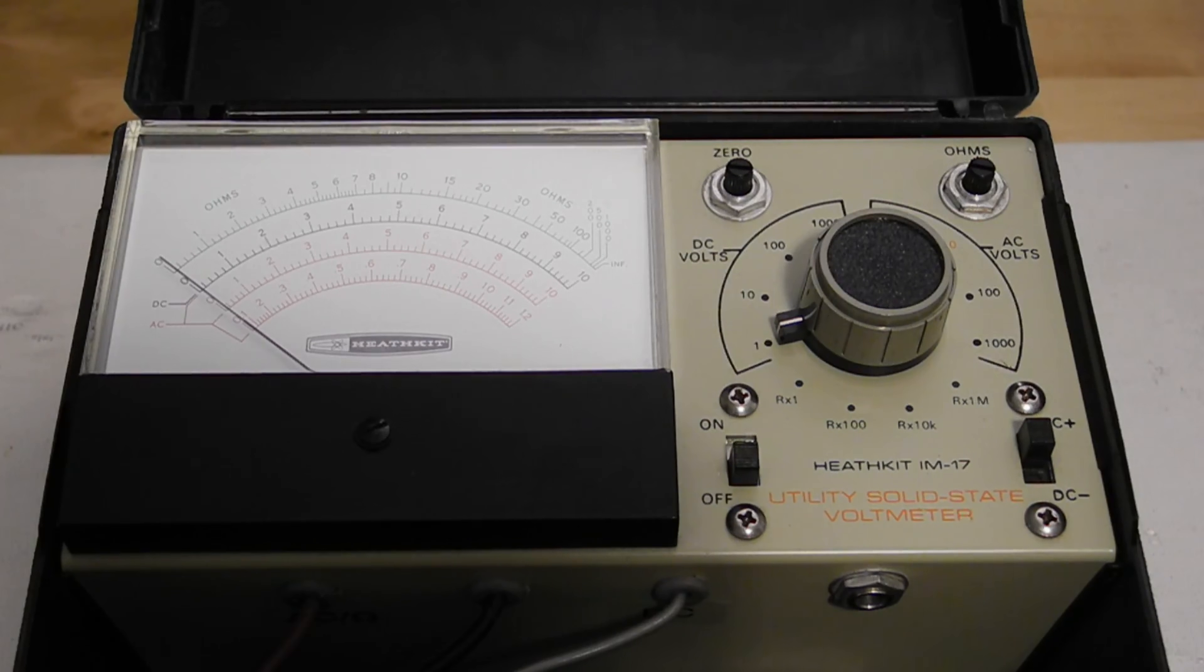The zero knob is adjusted so the meter reads zero with no input. This needs to be set from time to time due to temperature changes or as battery voltage varies.